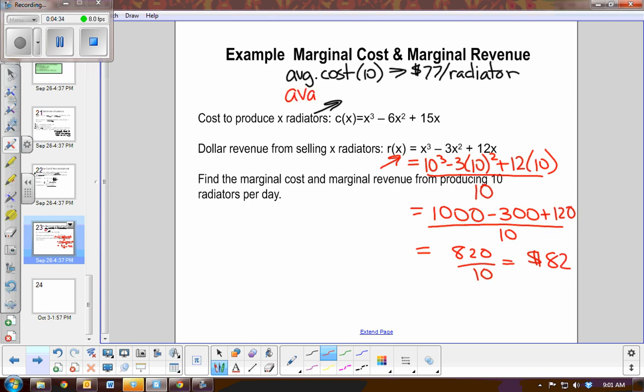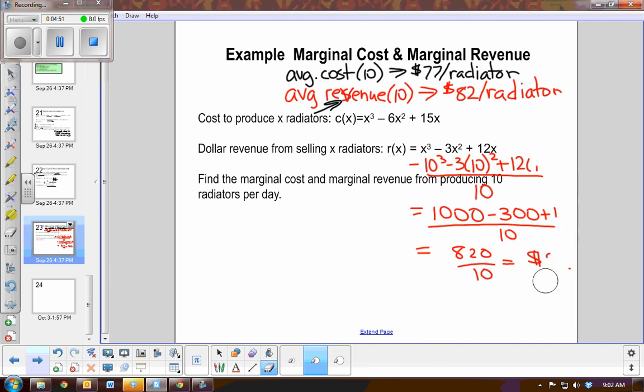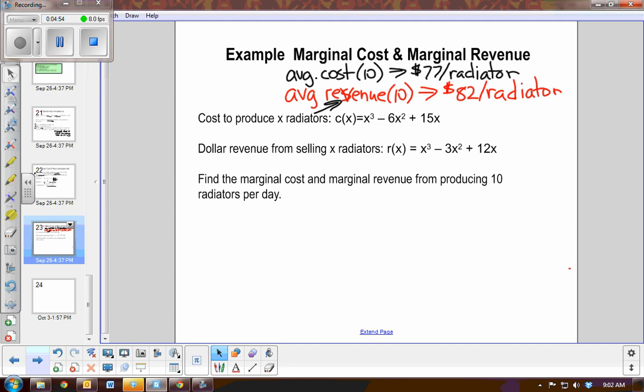So my average revenue when I make 10 radiators is about $82 per radiator. Now let's talk about, would it make sense for my company to make maybe 11 radiators? Is the revenue better? We're going to look at the derivative.